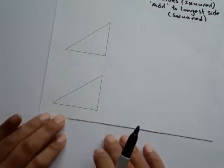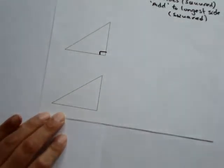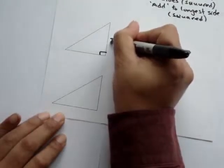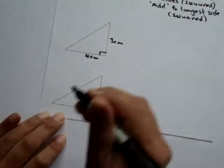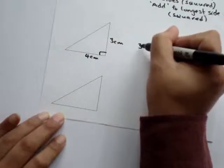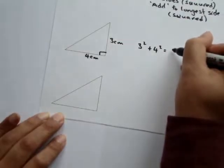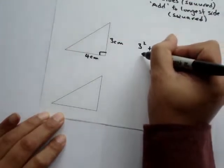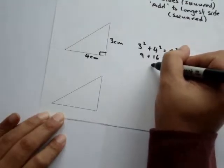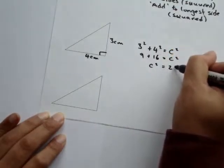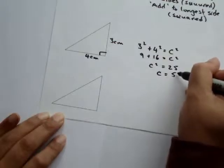Let's use the Pythagorean theorem. If we have a right angle triangle with a 3 cm length and a 4 cm length, then A squared — which is 3 squared — plus B squared — which is 4 squared — equals our hypotenuse squared, C squared. So 9 plus 16 equals C squared, meaning C squared is 25, and our hypotenuse C is 5 cm.